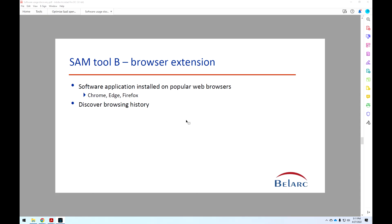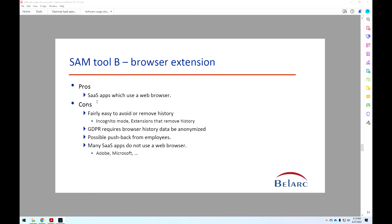SAM Tool B uses a browser extension — software applications installed on the user's web browser, typically available for Chrome, Edge, and Firefox. It looks at the browsing history and deduces which applications were accessed. The pros are it should work for applications that use a web browser. The cons are that browsing history is fairly easy to clear or avoid. There are also GDPR issues where data must be anonymized, which is less helpful in Europe, and possible pushback from users. Additionally, many SaaS applications don't use a web browser — they use their own application client — so those will be missed.